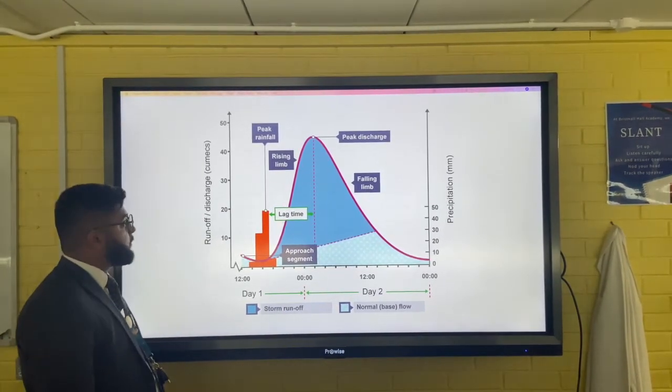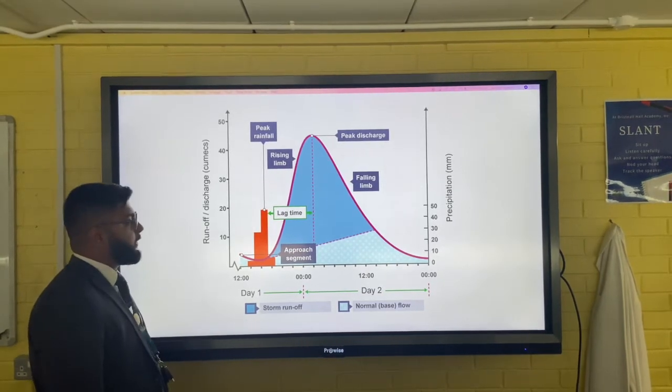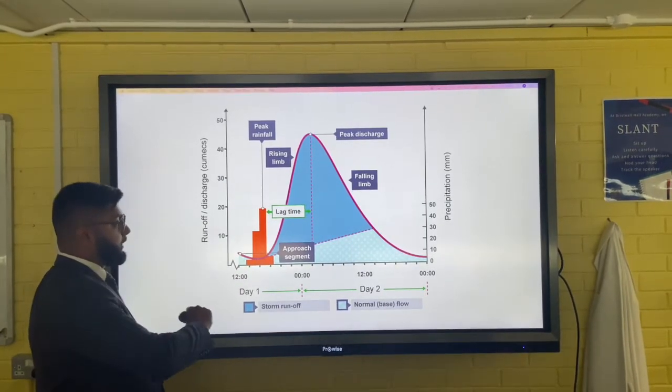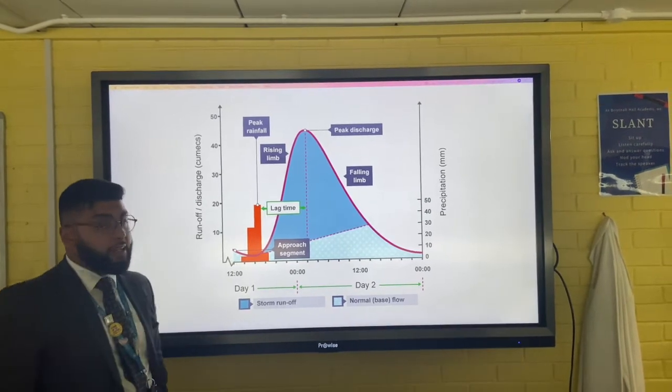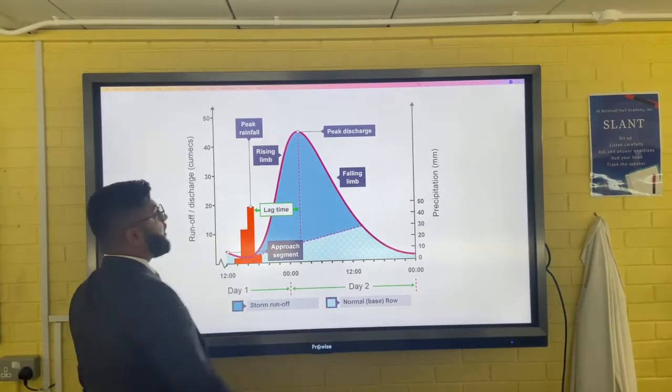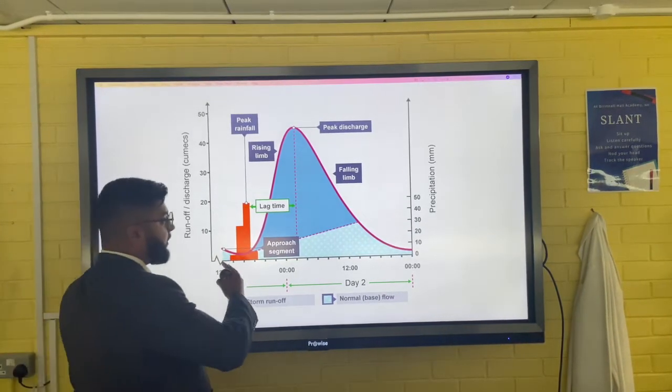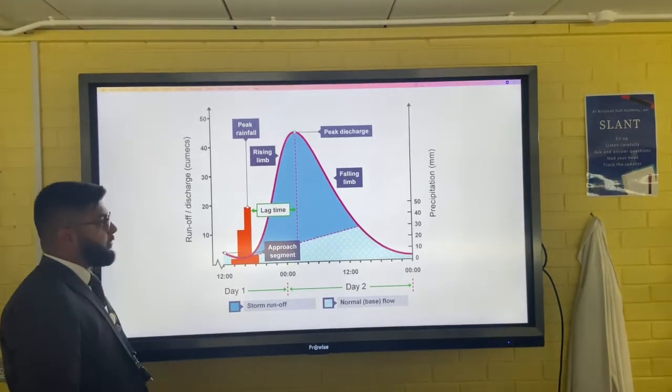The different parts of a flood hydrograph: starting off with the bar chart, these show when the rainfall has occurred. You have peak rainfall, which is the highest point on the bar chart. In terms of the line chart, you'll notice that the line graph is a little bit further on in time in terms of river discharge, because it takes a little bit of time for the water that falls as rainfall to get into the river channel.